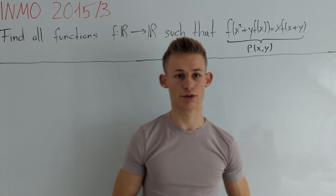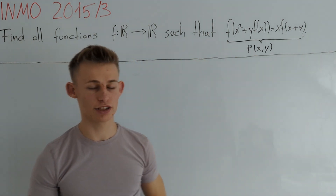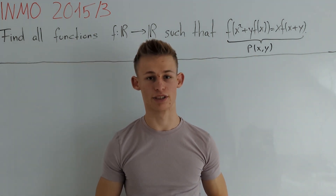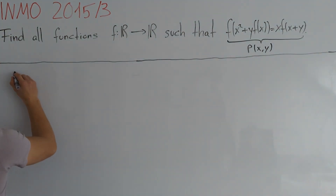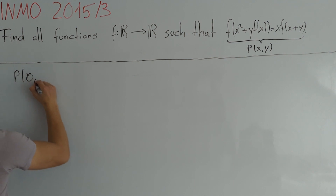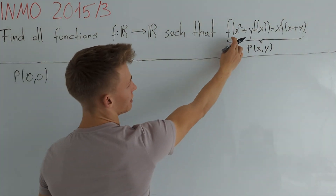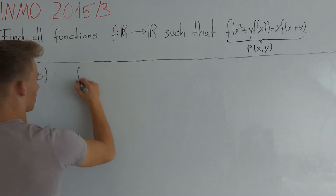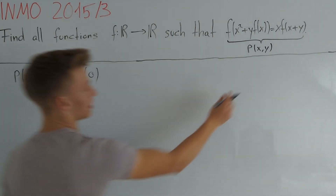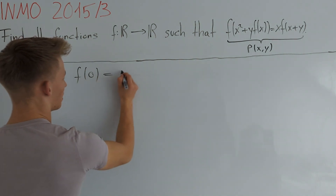One thing which is always a good idea when dealing with functional equations is to plug in the value 0. So let's plug in the value 0 for both x and y. We get that f(0+0), which is only f(0), should be equal to 0 times something, which is 0.